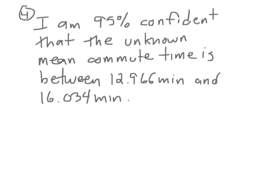And then really the fourth step of the inference toolbox, remember, was interpret. And this is a sentence you have to be able to write. I'm 95% confident, again, don't use the word chance, that the unknown mean commute time is between 12.966 minutes and 16.04 minutes. This sentence really is probably the most important thing. This sentence is in many ways the answer to any kind of confidence interval question. So again, I went through the whole inference toolbox, right? Parameter was step one. Conditions was step two. Calculations was step three. And this interpret was step four.